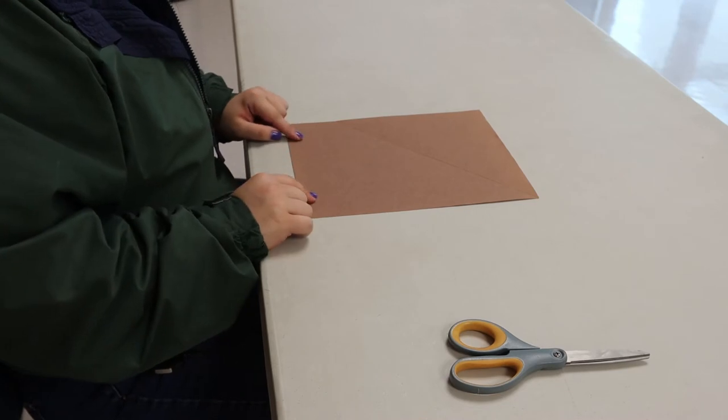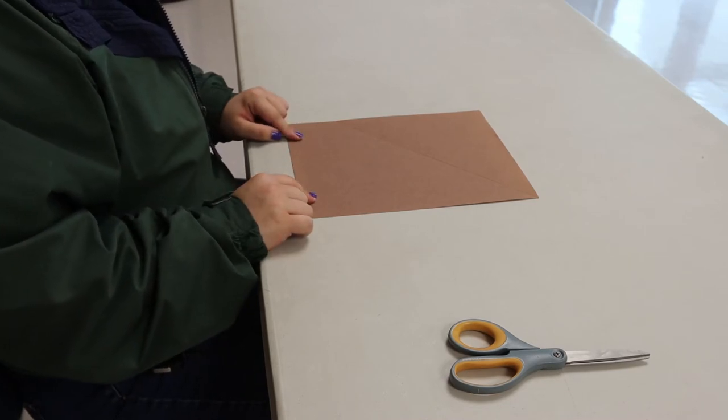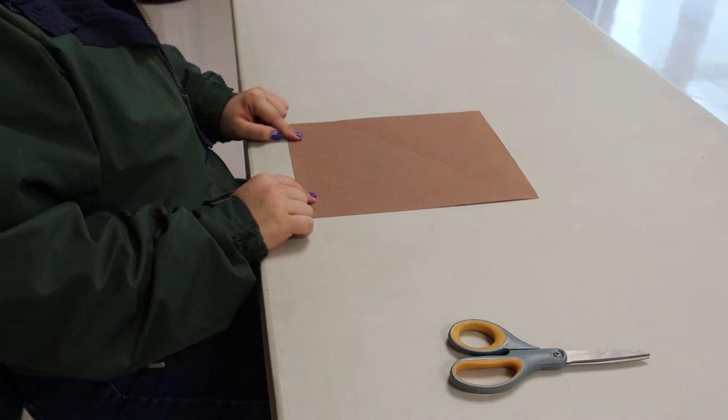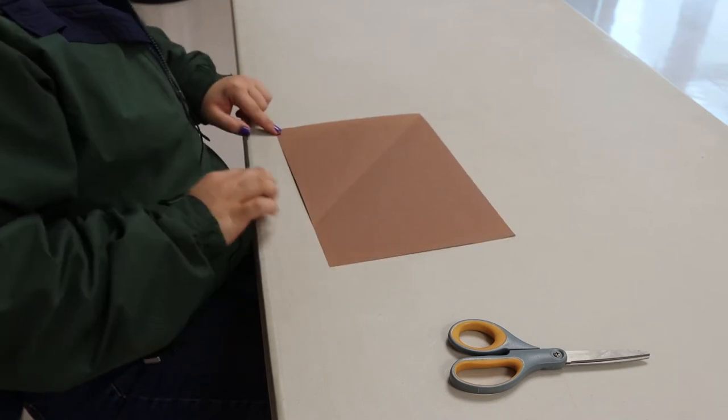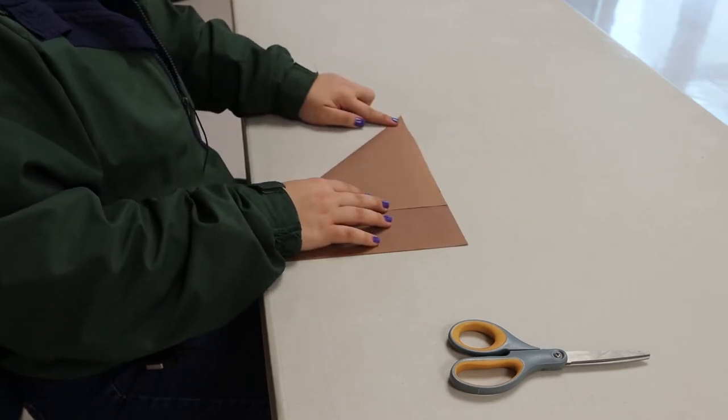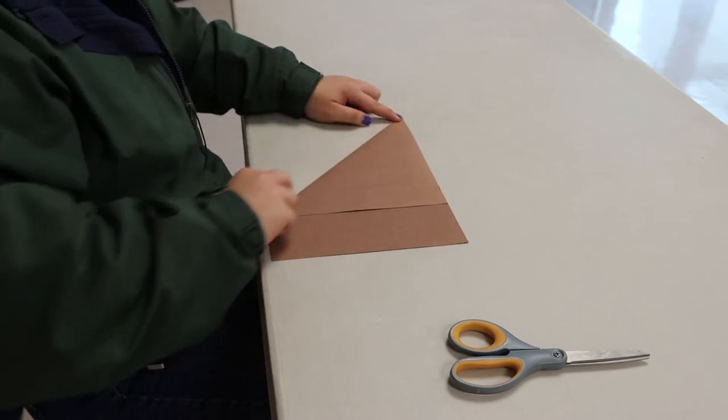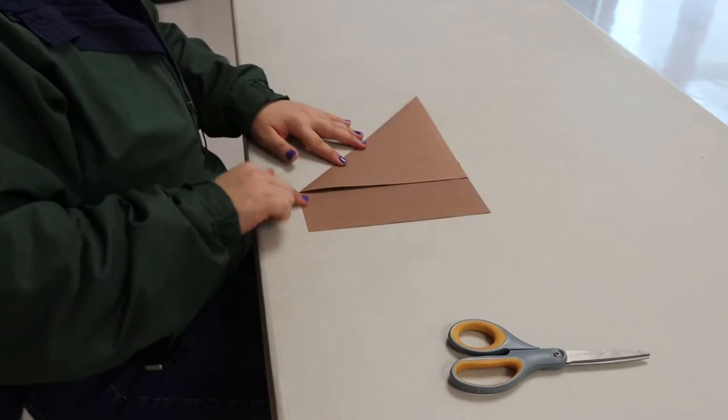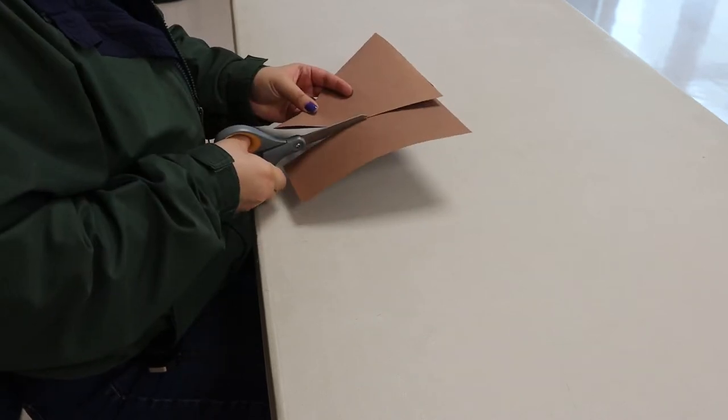We're going to have to make this brown piece of paper into a square. A trick to make it into a perfect square is to take this corner, fold it over until you get a point up here, and then we're going to crease it. Now we're going to chop off this bottom section here.